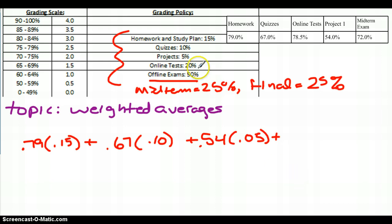Plus online tests. So online tests, I've got a 78.5% average, and those are worth 20%. Plus my midterm exam, and I've got a 72%, times .25, saying that my midterm is worth 25% of my grade. So let's add all of that up right now.